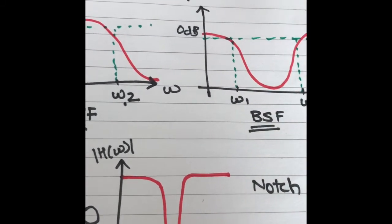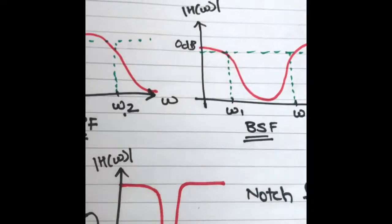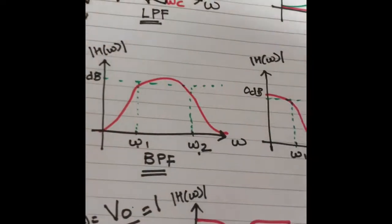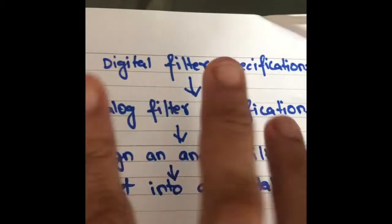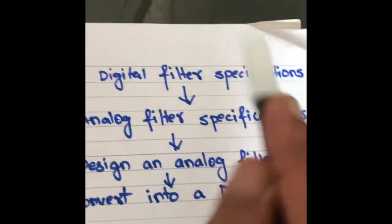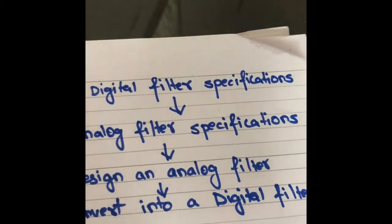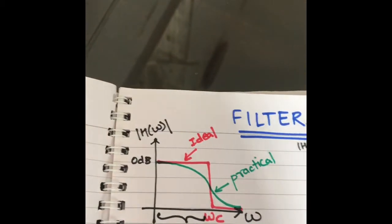For our subject DSP, we will mainly be designing digital filters, but the path to designing a digital filter goes through analog filters. In a typical problem, digital filter specifications will be given. These specifications include things like how much gain you want in the pass band and stop band, what the cutoff frequency is, and what the pass band and stop band edge frequencies are.